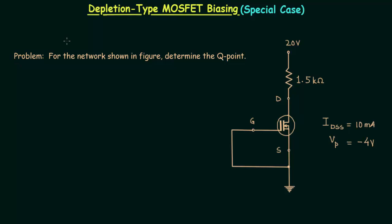In the previous lecture, we saw how to obtain the operating point when a depletion-type MOSFET is biased using self-bias configuration. Out of mathematical and graphical approaches, we followed the graphical approach.